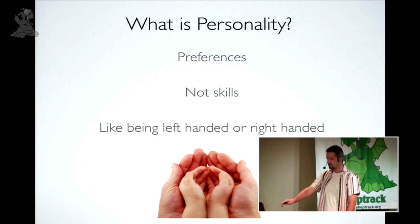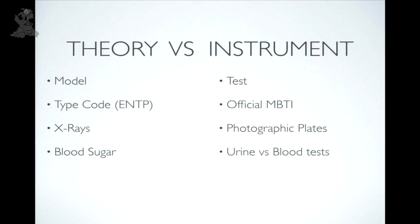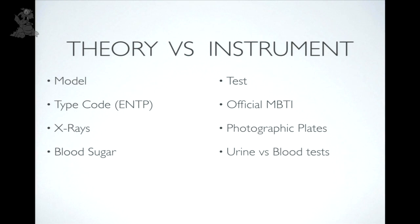An important scientific distinction: theory versus instrument. Most people think the MBTI is the theory — it's not; it's just the test. The type code is the theory, just as X-ray laws are separate from photographic plates used to measure them, or as blood sugar science is separate from the evolving tests used to measure it — from urine tests to blood draws to skin-inserted monitors. Tests improve; the underlying theory remains distinct.